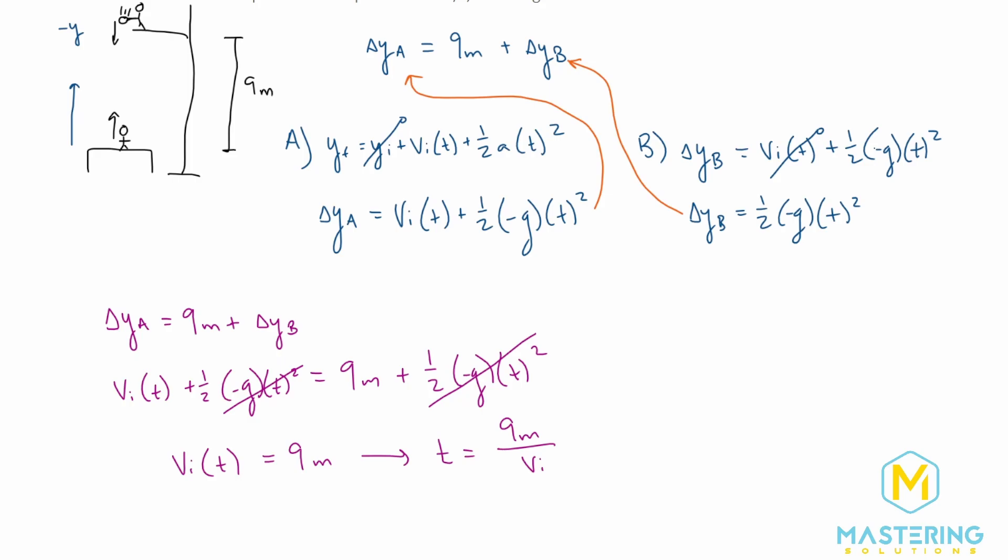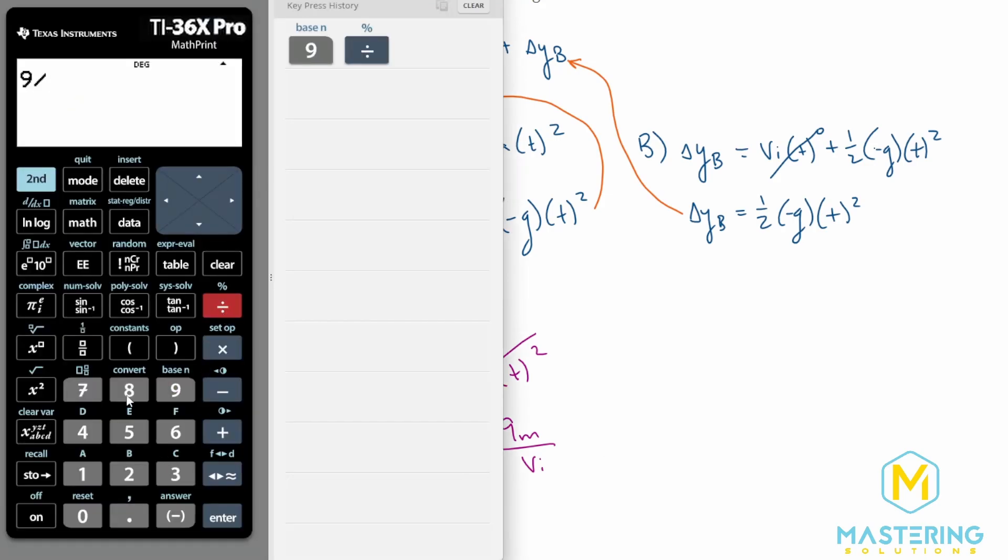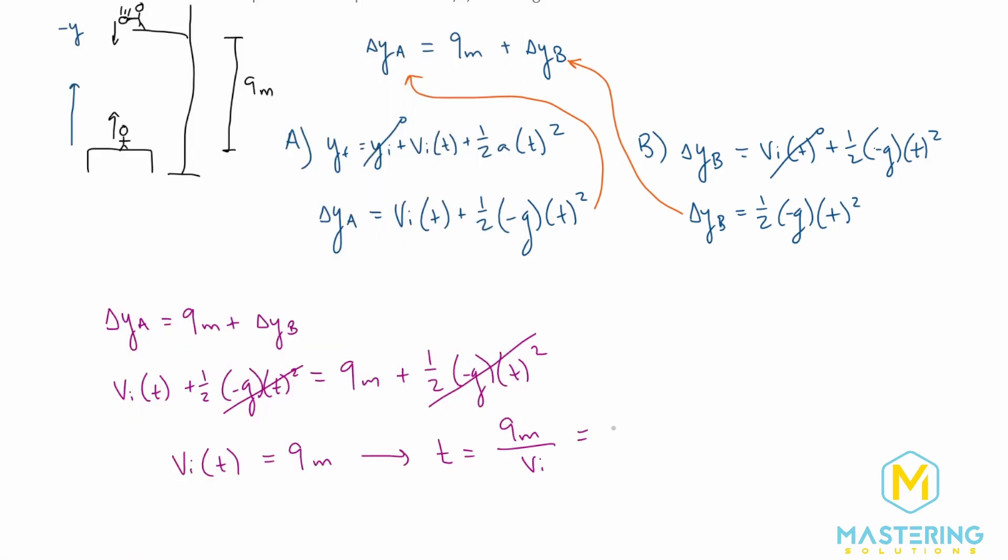So now when we plug this in, we have nine meters divided by the initial velocity, which was eight, so we have 1.125. So the time we can round that to 1.1 seconds, which is the final answer for how long the acrobat is in the air until he catches the ball.